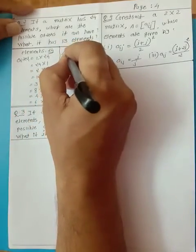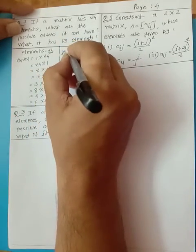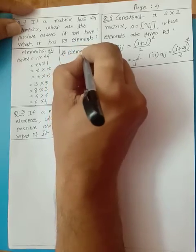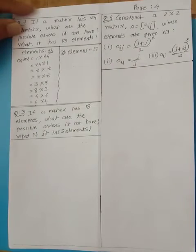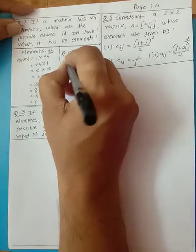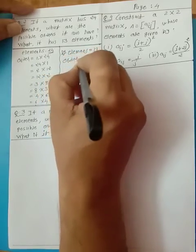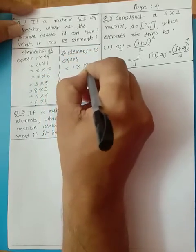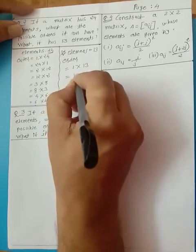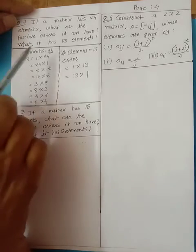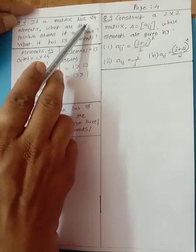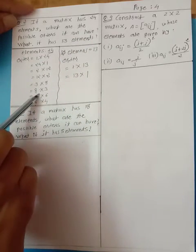The second question: if there are 13 elements — suppose 13 — how many orders of matrix can be formed? Since 13 is prime, it has only one factor: you can write 1×13 or 13×1. That's all. So from the given elements, you had to decide the possible orders.